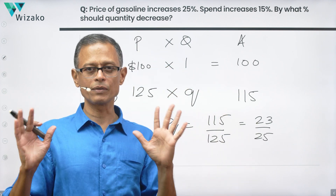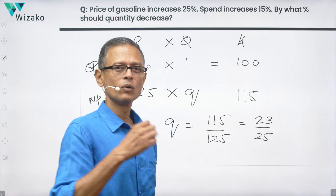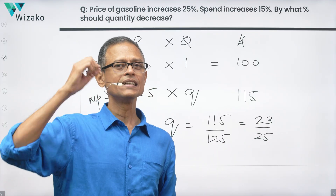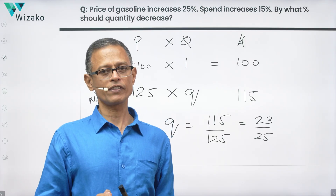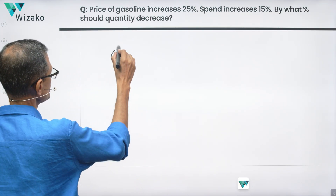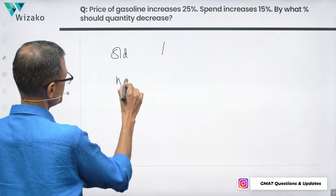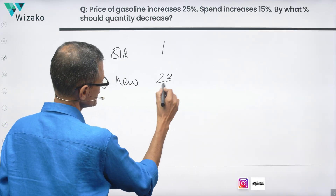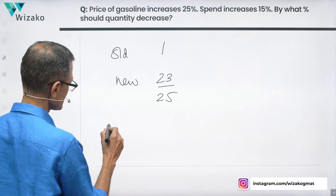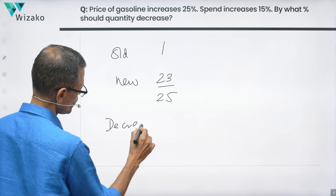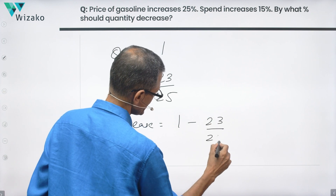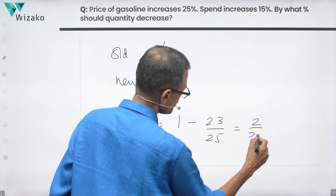So the quantity has come down. This is the new quantity. What do we need to find? Not just the new quantity or the decrease in quantity — we need the percentage decrease. First, let's find the decrease in quantity. The old quantity was 1, and the new quantity is 23/25 units. So the decrease in quantity is 1 minus 23/25, which equals 2/25.